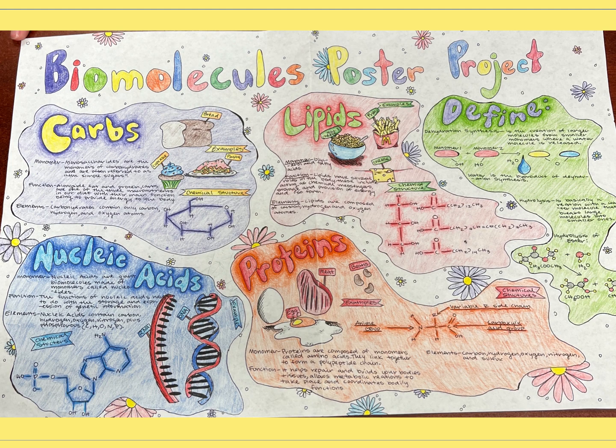Take a look at this example of the biomolecules poster project — this one was done on paper. You can do it on paper, make a Google Slides project, or use Notability. If you use Google Slides, you'll have one slide for each of these topics. If you use a poster, you're going to want to lay it out like this. Make sure you use the rubric, and make a nice poster that shows what you've learned about carbs, lipids, nucleic acids, and proteins. Make it interesting.